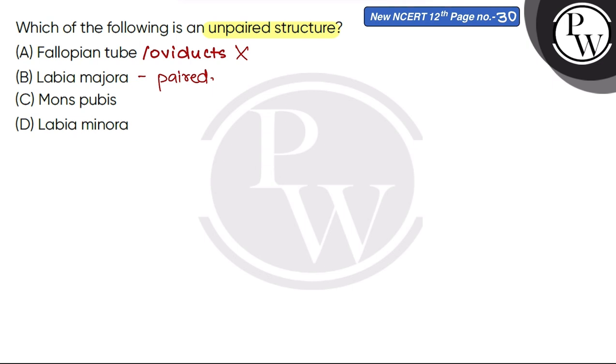It is unpaired. Mons pubis is correct. Then Labia minora are also paired folds of tissue that underlie the labia majora.